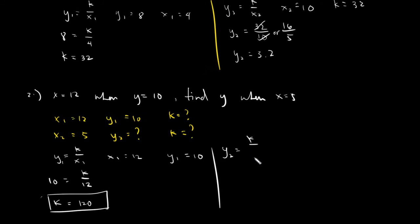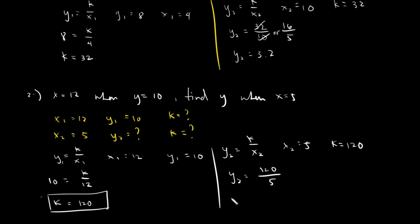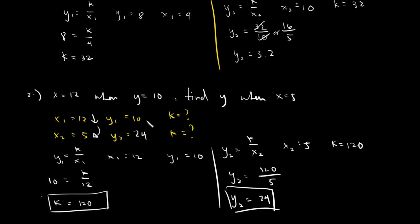For the second set, y sub 2 equals k over x sub 2. X sub 2 is 5 and k is 120. Substituting gives y sub 2 equals 120 divided by 5, and the answer is simply 24. You will notice that the x value decreased from 12 to 5, so since it's inverse variation, the y value will increase — from 10 to 24.